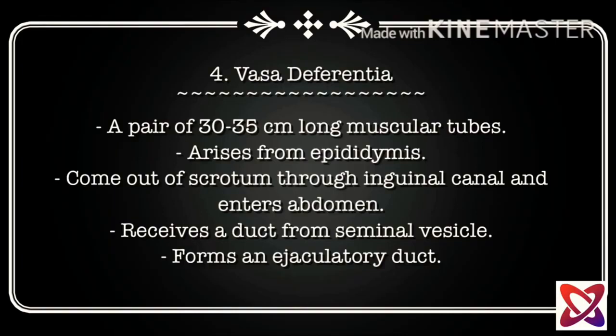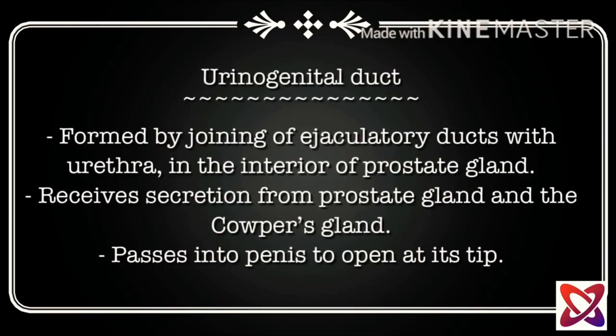The vas deferentia forms an ejaculatory duct. Now let's discuss the urinogenital duct. This duct is formed by the joining of ejaculatory ducts with the urethra in the interior of the prostate gland. It receives secretions from the prostate gland and Cowper's gland.